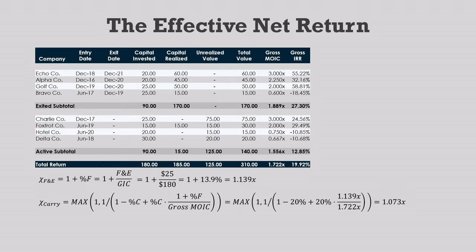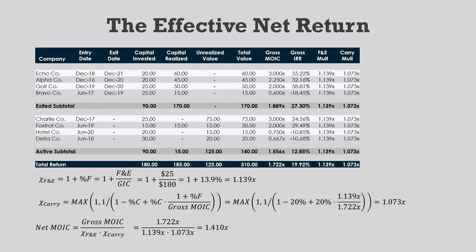Then we calculate the portfolio's net multiple by dividing the gross multiple by the F&E and carry multipliers. This gives us a net multiple of invested capital of 1.410x. Now let's assume that the fees, expenses, and carry are pooled in this portfolio because that's how they work for most private equity funds. This means that we can apply the portfolio's F&E and carry multipliers to every row on the table, and this lets us calculate a net multiple for each deal and each group of deals.